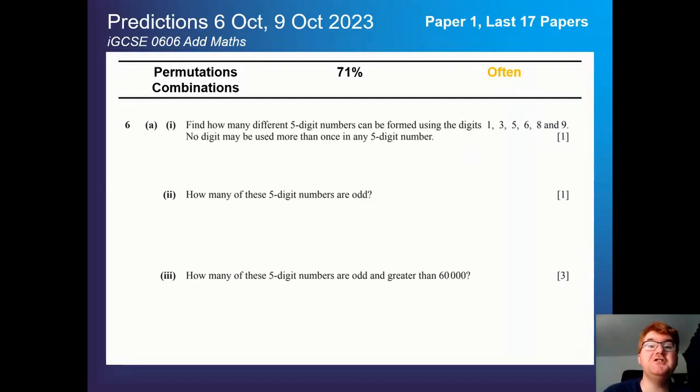Welcome to another Ginger Math Petition video. Today I'm going to be predicting the IGCSE AdMaths, the 0606 course, with exams coming on the 6th of October on Friday and the 9th of October on Monday, so a big tight turnaround. Just like my previous prediction videos, I have done a Paper 1 and Paper 2 prediction over the last 17 papers to give us some up-to-date information on what's appearing on the papers.